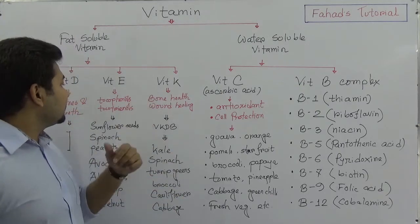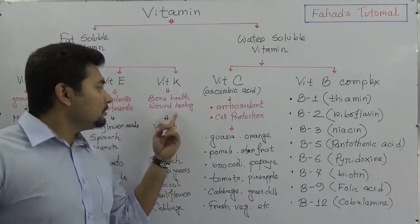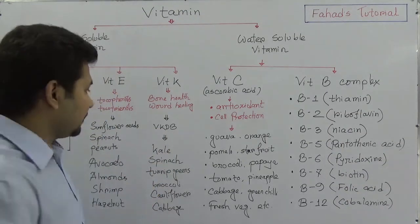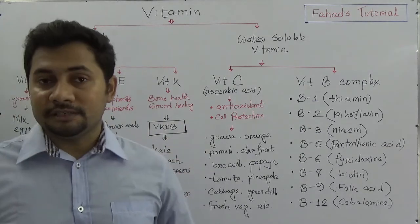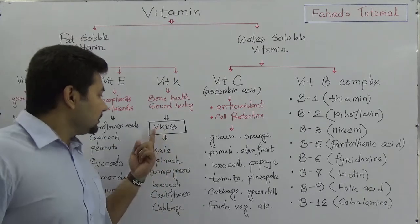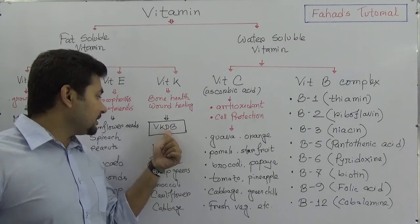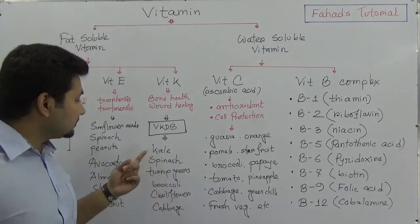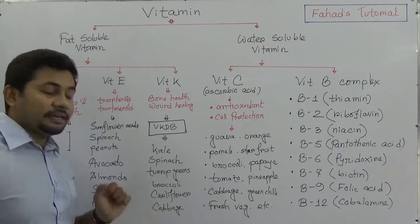Vitamin K is important for bone health and wound healing. A key function is its role in blood clotting — vitamin K deficiency can lead to a bleeding disorder known as vitamin K deficiency bleeding. Food sources of vitamin K include kale, spinach, turnip greens, broccoli, cauliflower, and cabbage.